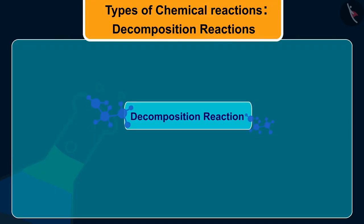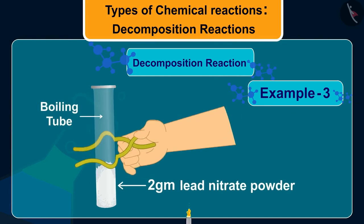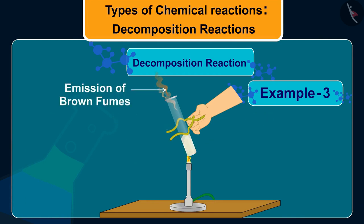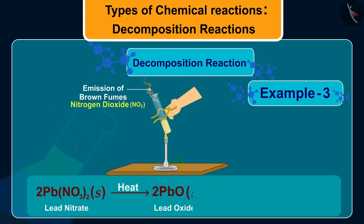Let us take one more example of decomposition reaction. Take about two grams of lead nitrate powder in a boiling tube. Hold the boiling tube with a pair of tongs and heat it over a flame. You will observe the emission of brown fumes. These fumes are of nitrogen dioxide NO₂. The reaction that takes place is lead nitrate decomposes to form lead oxide, nitrogen dioxide, and oxygen.